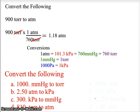Just as we have done throughout the year, we can use dimensional analysis and conversion factors to convert between various pressure measures. For example, converting 900 Torr to atmospheres: 900 Torr times the conversion factor of one atmosphere over 760 Torricelli's. The Torricelli units cancel, leaving atmospheres, and 900 divided by 760 gives us 1.18 atmospheres.